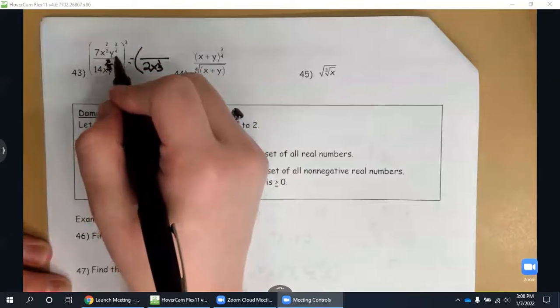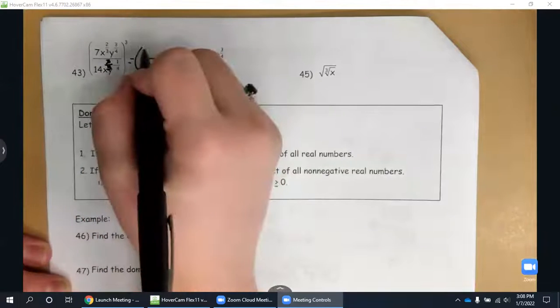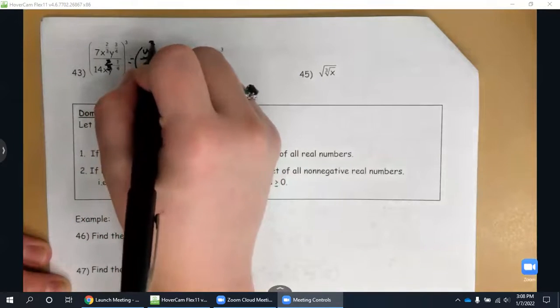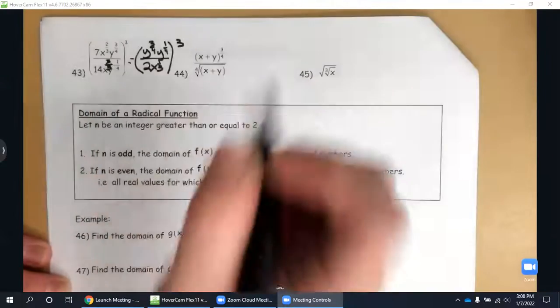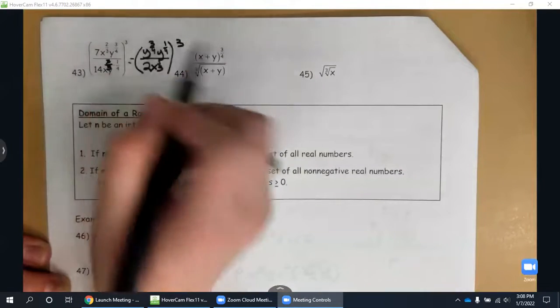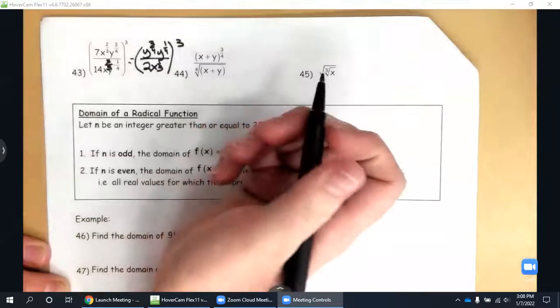And then y to the three-fourths and y to the one-fourth, negative one-fourth. So that means I'm going to have to move it to the top. That's going to be three-fourths plus one-fourth, which is four over four or one. So that's y over two x to the one-third, cubed.